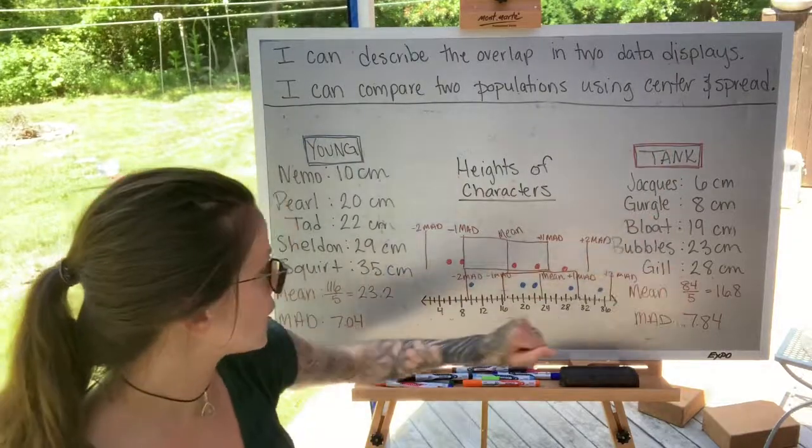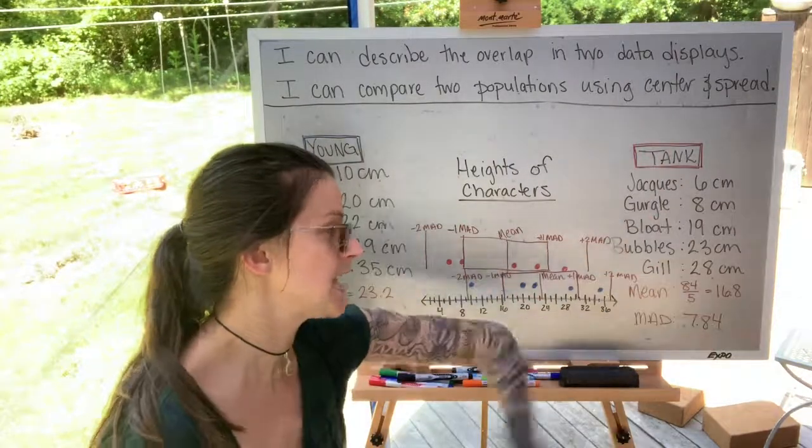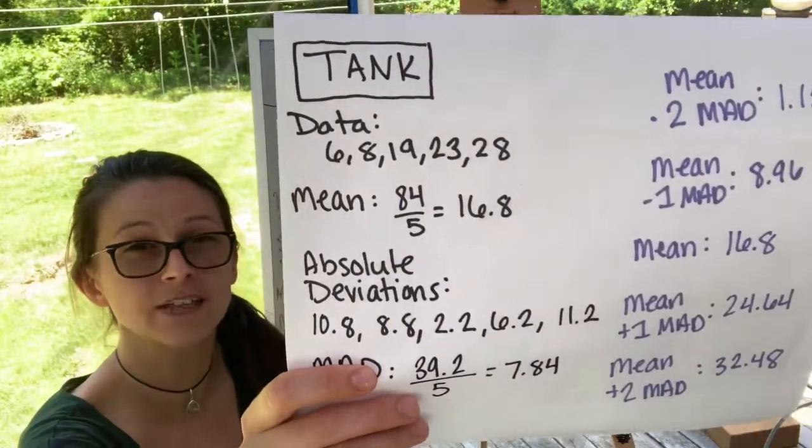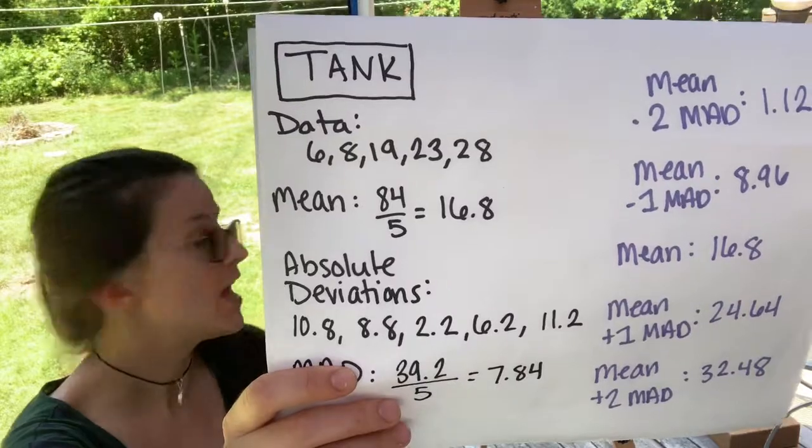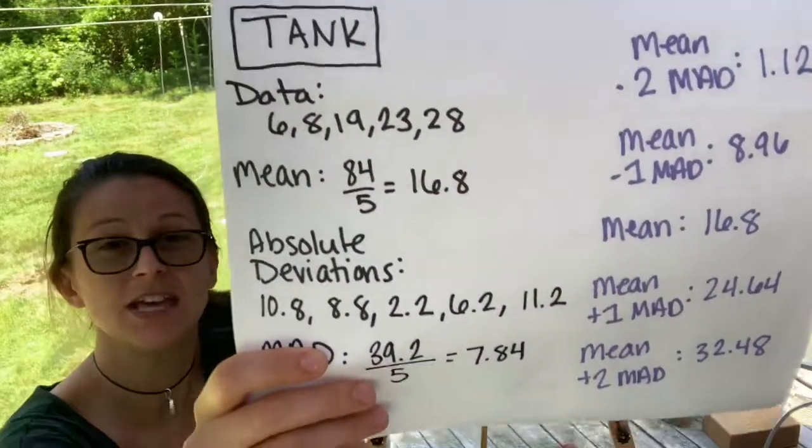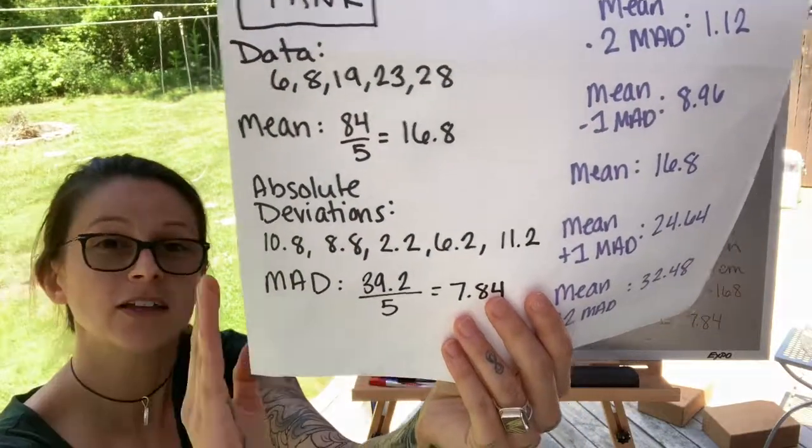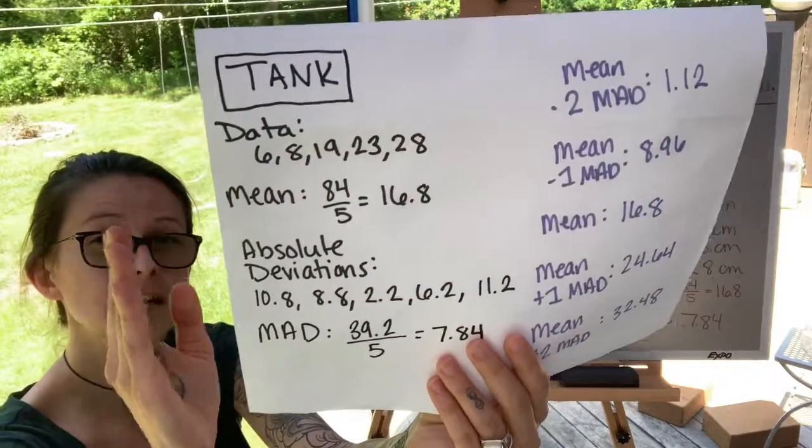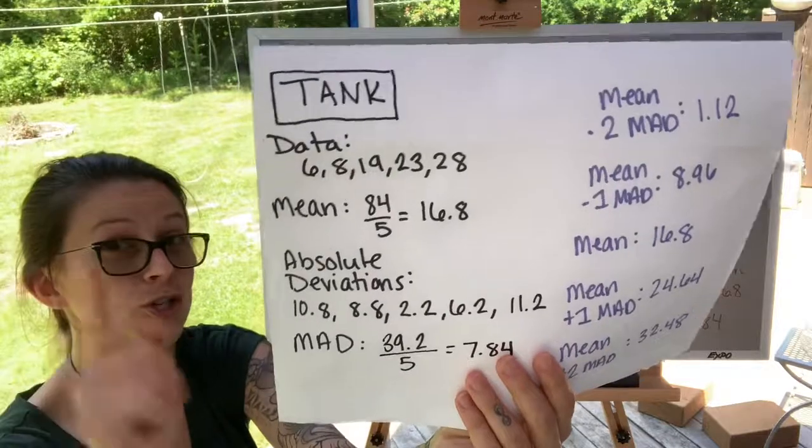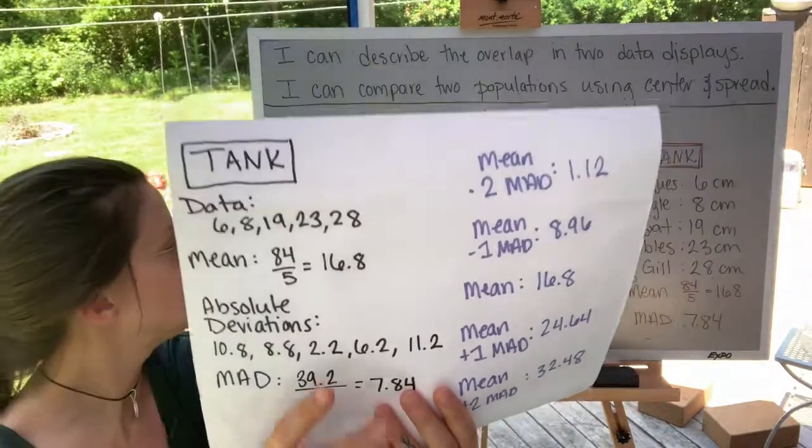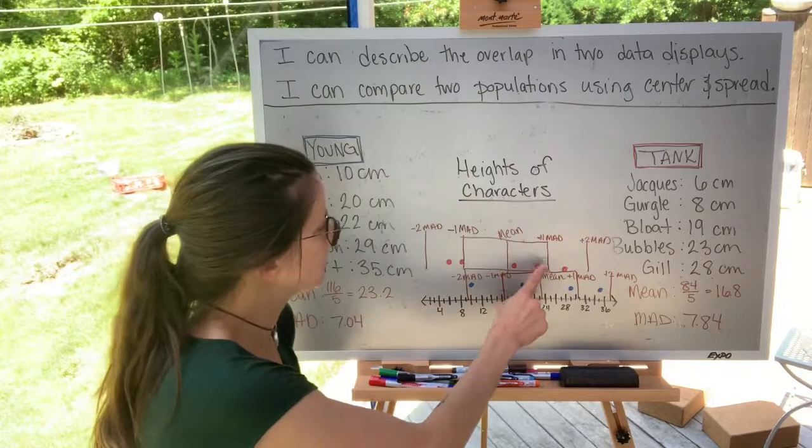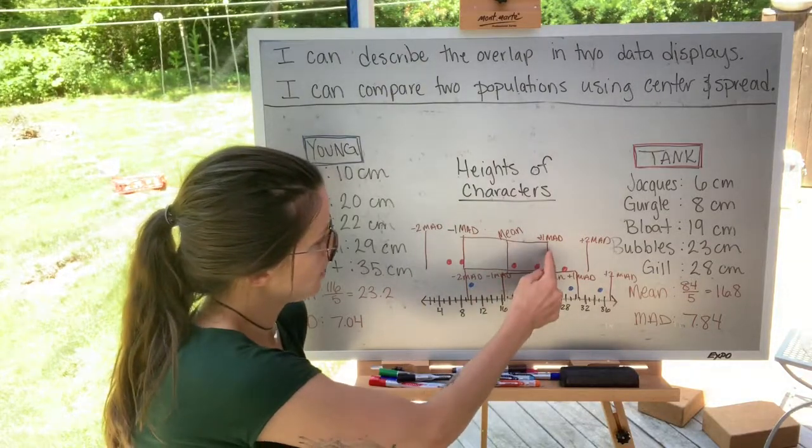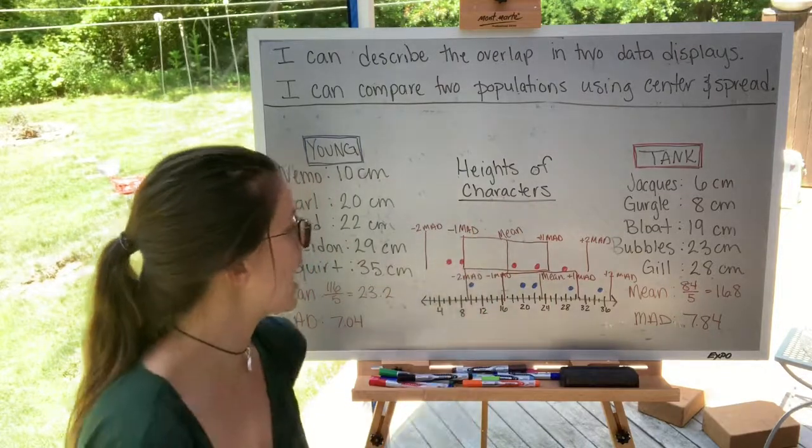For the tank characters, our mean is 16.8, found by adding up all of the data points and dividing by five, and then the mean absolute deviation is 7.84. So calculating the distance each of those data points is from the center, adding them all up, make sure you take the absolute value, and then divide by five. So here, our mean absolute deviation takes us to about 25 and about nine.